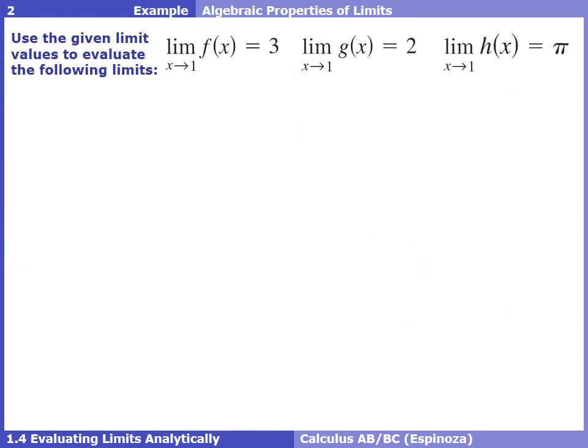Now let's apply those algebraic properties to specific limits. We're given that the limit of f, g, and h as they all approach 1 equals 3, 2, and π respectively. That means if we had graphs of these functions and approached x = 1, we'd see y values of 3, 2, and π. Since we're not given the graphs, we just trust these values and apply them to find other limits.